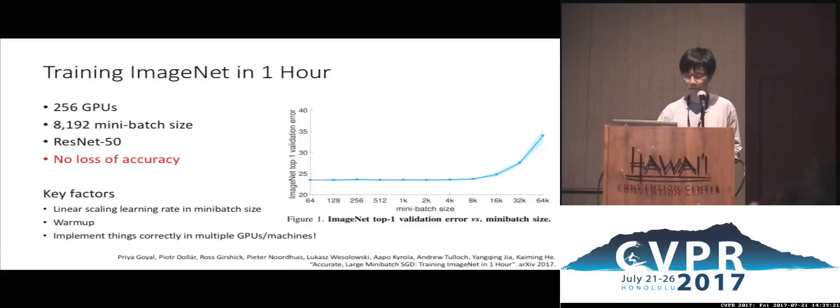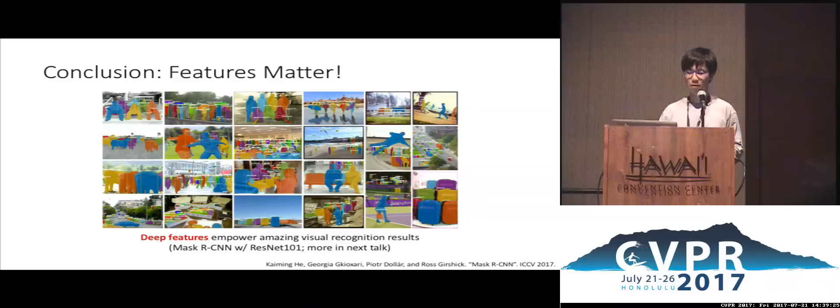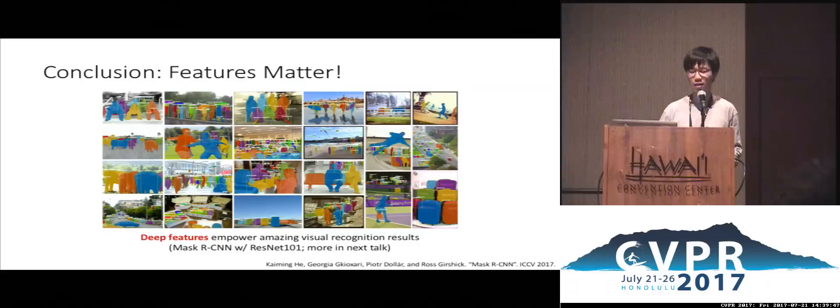In conclusion, the success of deep learning is the success of feature learning. In the case of visual recognition, features still matter. The power of deep features can be demonstrated by amazing visual recognition results in complicated tasks such as instance segmentation. I show a result of Mask RCNN with ResNet-101, which will be covered in the next talk by Ross. That's all. Thank you.